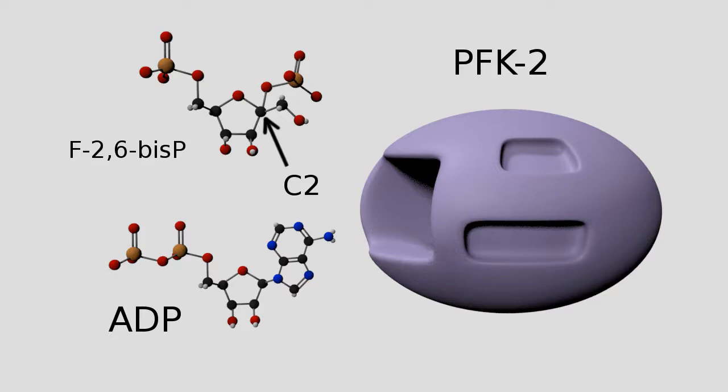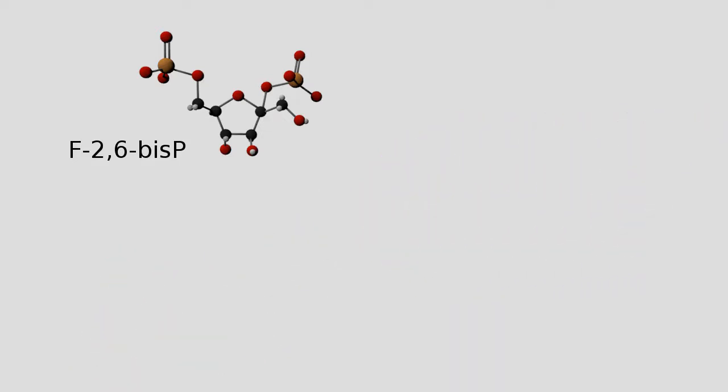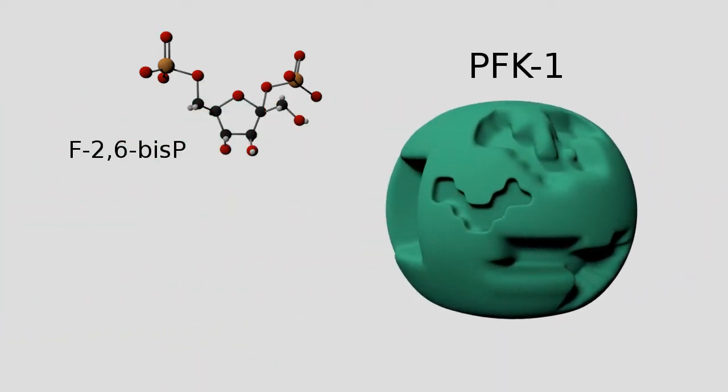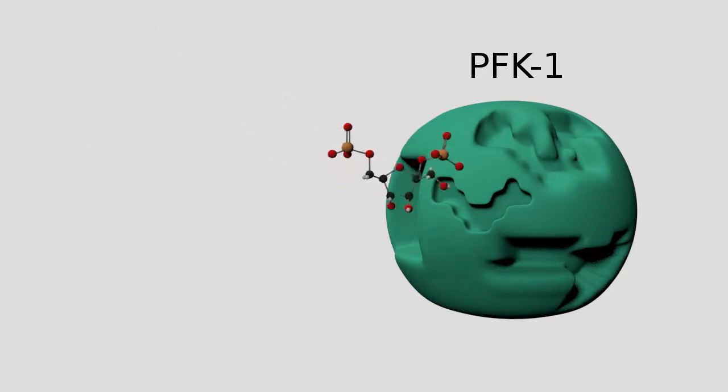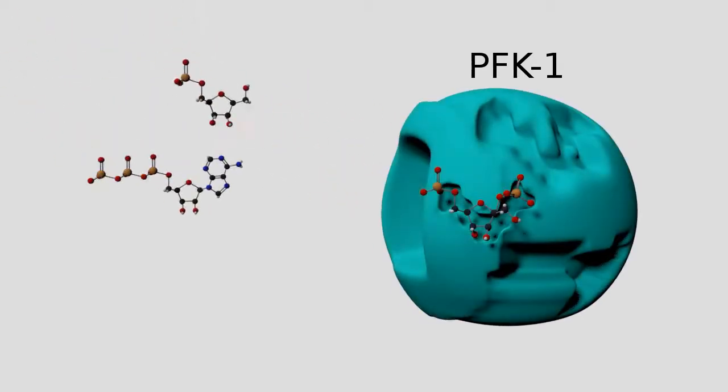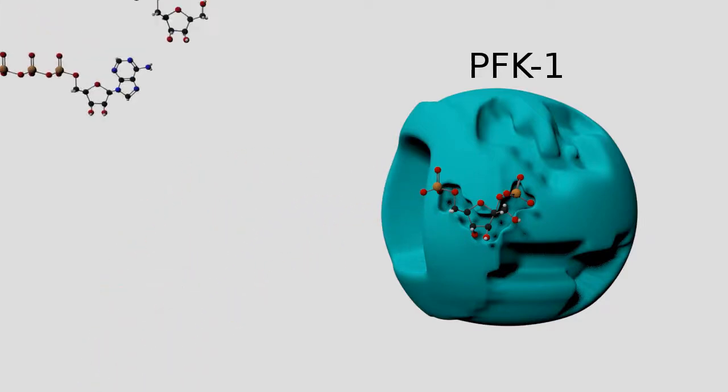Instead of proceeding with glycolysis, this compound acts as an allosteric regulator on PFK-1. And since PFK-1 performs the rate-limiting step of glycolysis, this increases the rate of glycolysis as a whole.